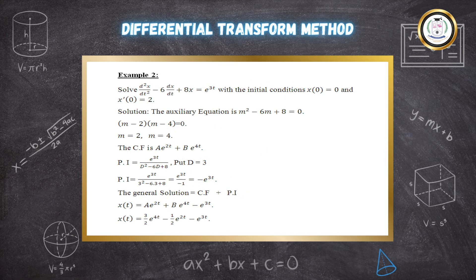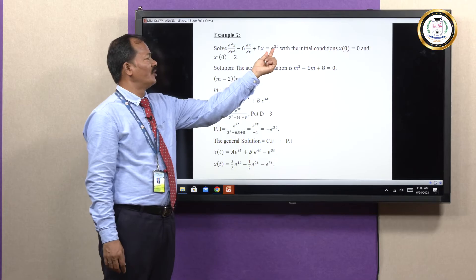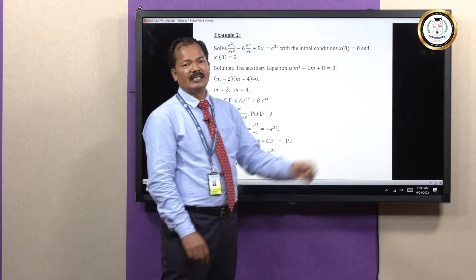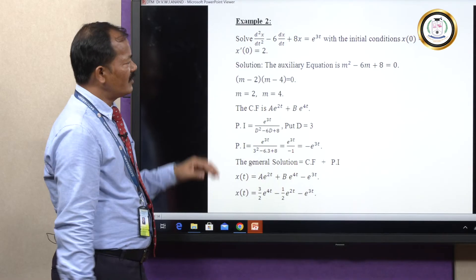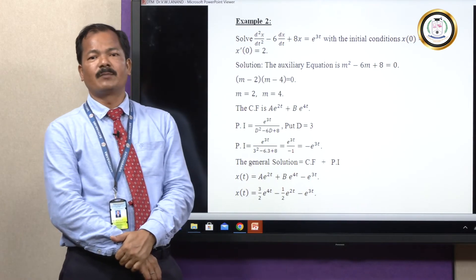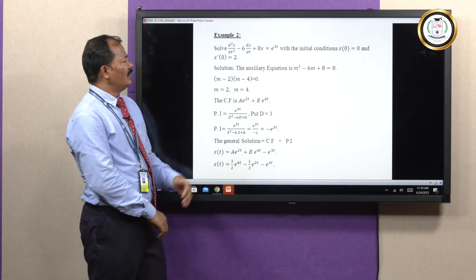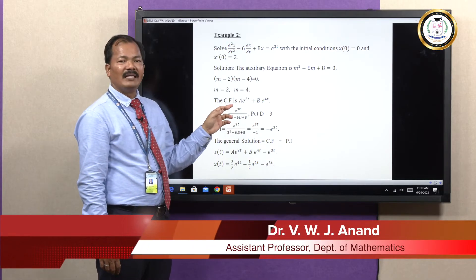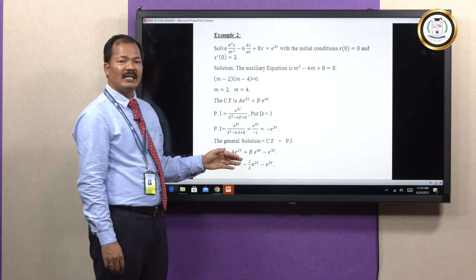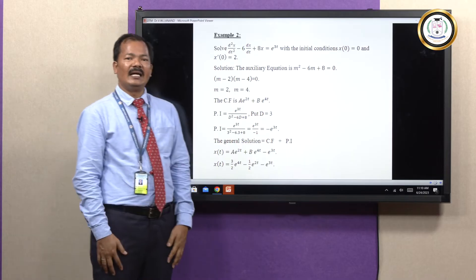Example 2: solve the second order linear differential equation where the right-hand side is an exponential function e to the power 3t, along with initial conditions x of 0 equals 0 and x-prime of 0 equals 2. First, let us discuss the solution by the analytical method. We use the auxiliary equation, find the complementary function, find the particular integral, and add them to get the general solution.